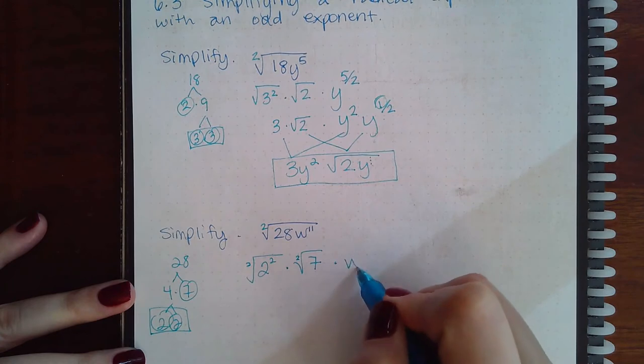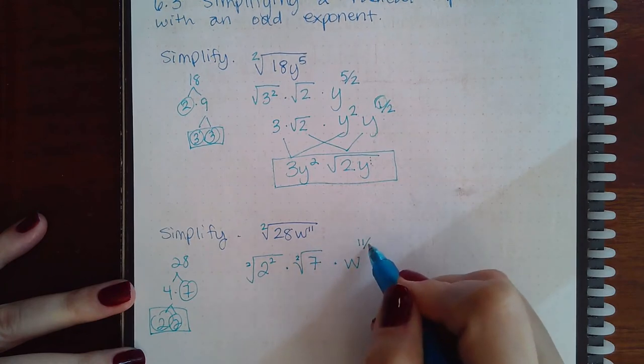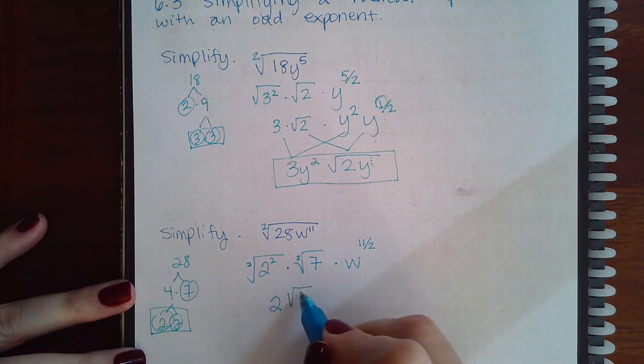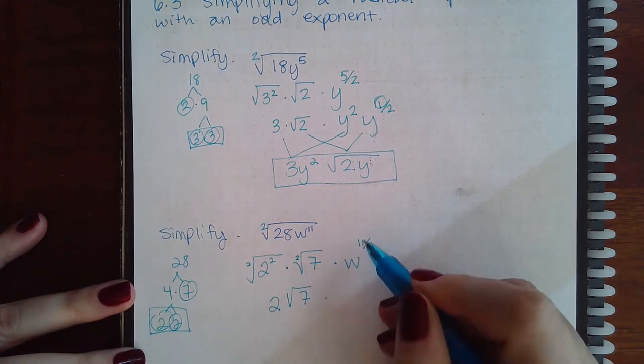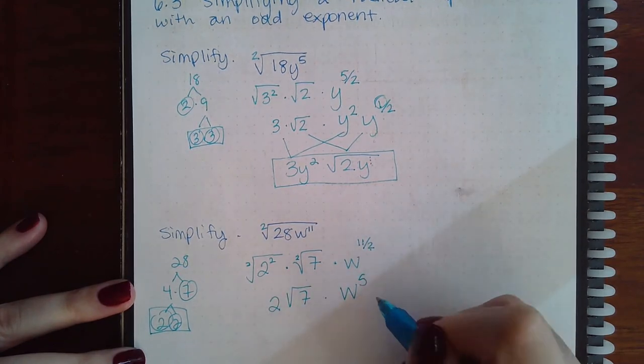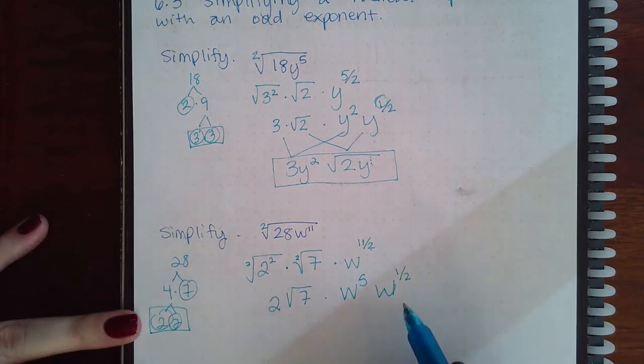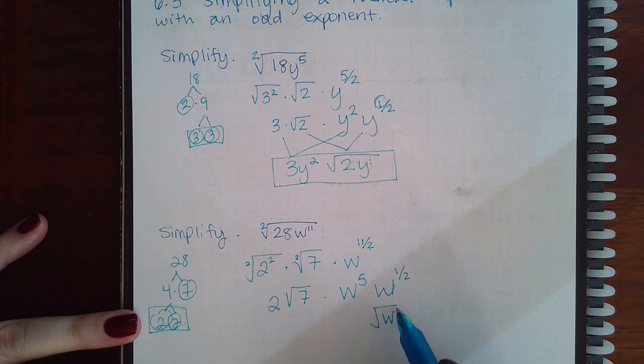For the variables, we do it differently. It's going to be 11 over 2. These cancel. I get 2. Square root of 7. 2 goes into 11 five times, but with 1 left over. And so then this is just the square root of w to the first power.